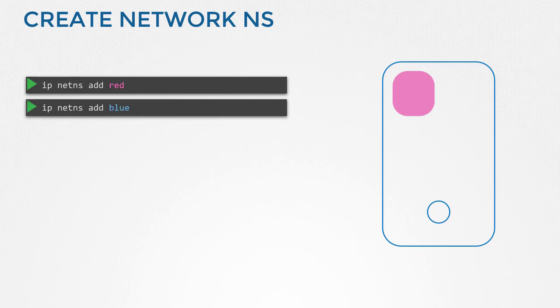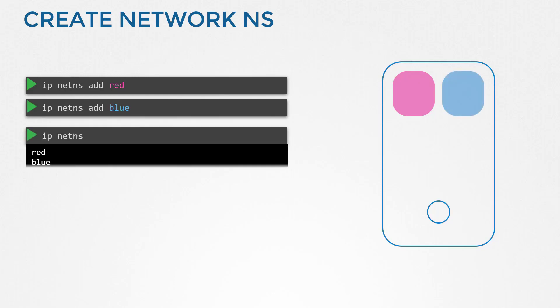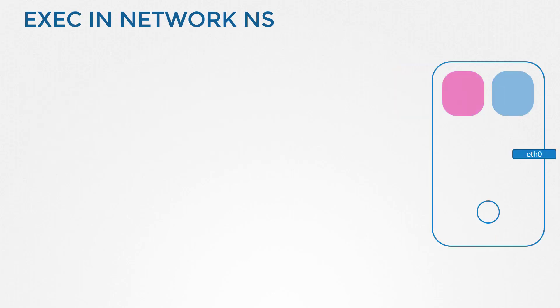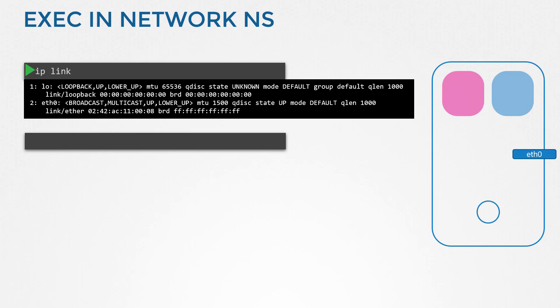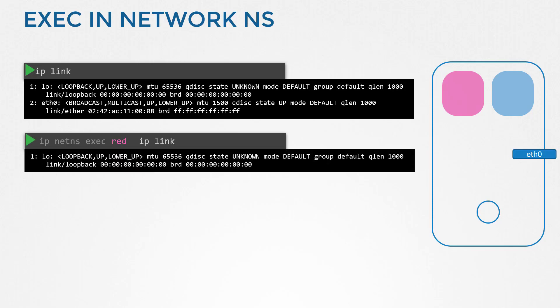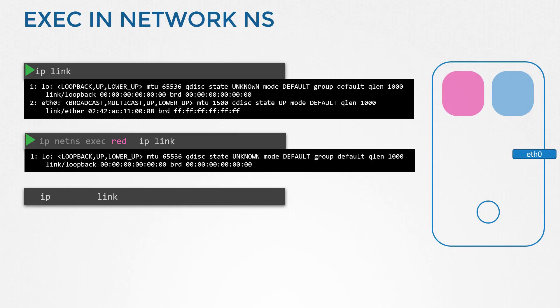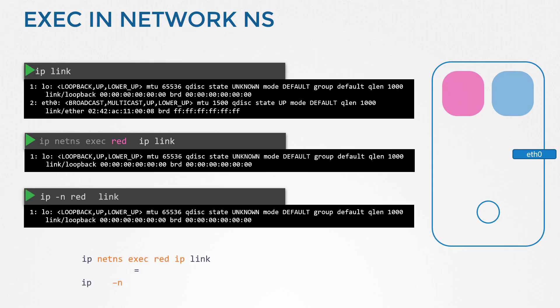The container can have its own virtual interfaces, routing, and ARP tables. To create a new network namespace on a Linux host, run the `ip netns add` command. In this case, we create two network namespaces. To list the network namespaces, run the `ip netns` command. To list the interfaces on the host, run the `ip link` command — you'll see the loopback interface and the eth0 interface. To run the same command within the red namespace, prefix it with `ip netns exec red` followed by the command, or use the `-n` option with the `ip link` command. Within the namespace, you only see the loopback interface — you cannot see the eth0 interface on the host. With namespaces, we have successfully prevented the container from seeing the host's interface.